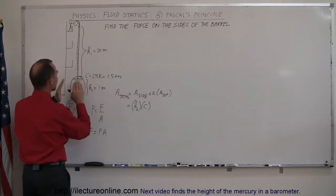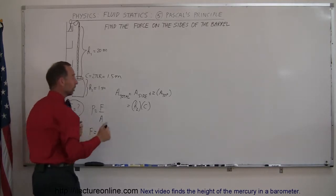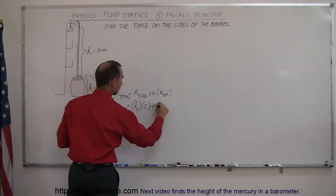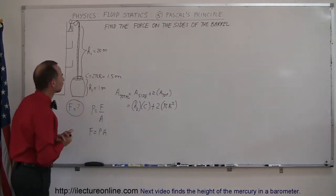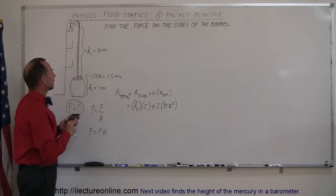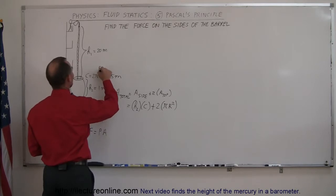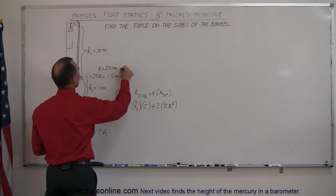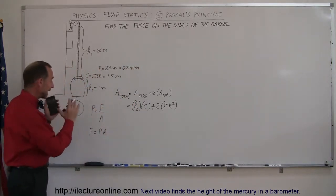That's the area of the side of the barrel. Then the top of the barrel is simply a circle, and there's two of them—one at the top, one at the bottom—so two times the area of the circle, which is π times the radius squared. If the circumference is 2πr, then the radius is 1.5 divided by 2 divided by π. The radius is about 24 centimeters, or 0.24 meters.